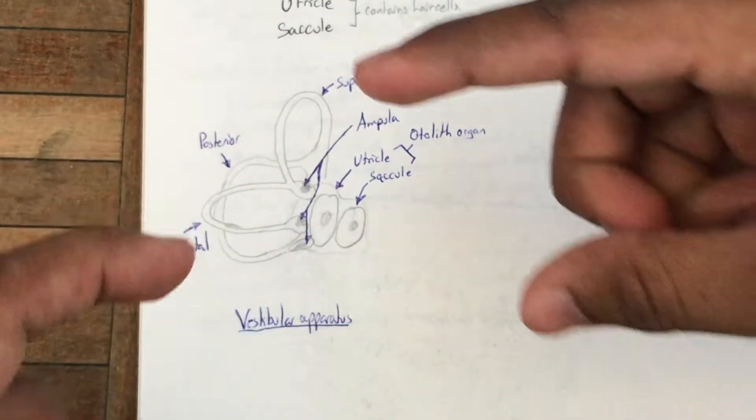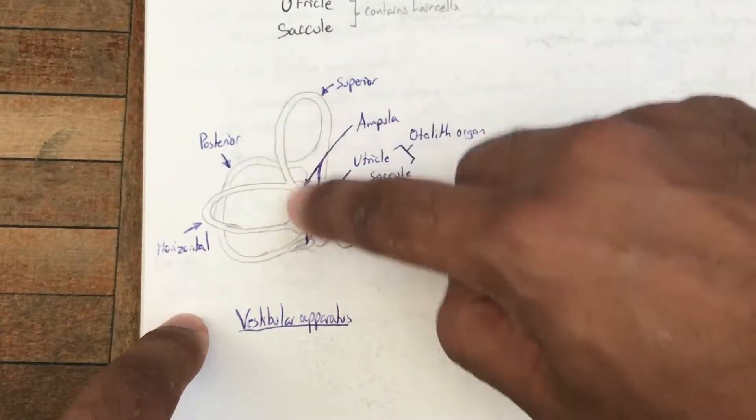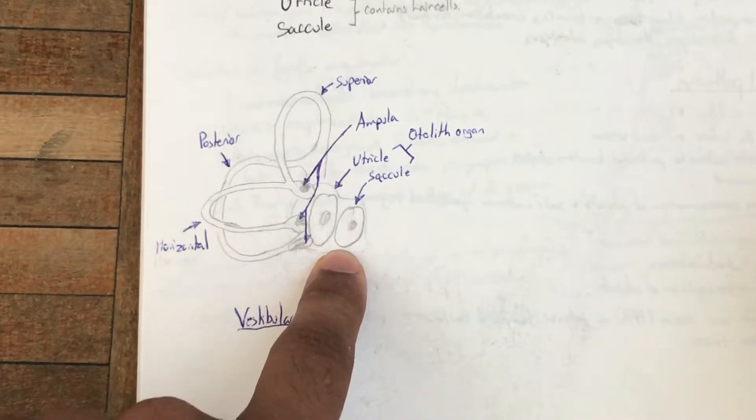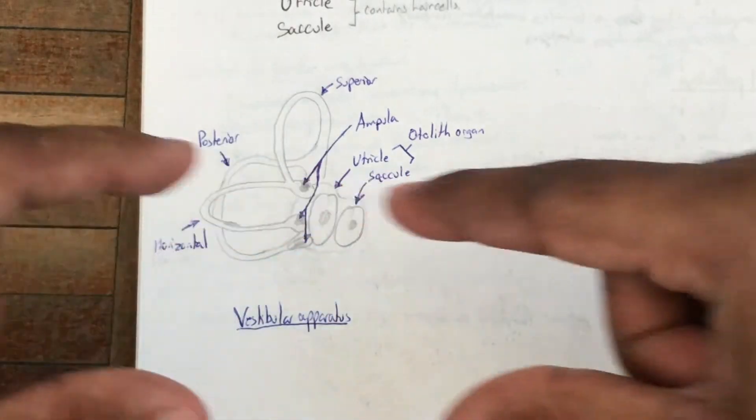The semicircular canals will measure rotation, so when you're rotating in certain directions, the fluid in that one will move and gives you a sense of movement. The otolith organs, however, are slightly different—they measure translation, so moving forward and back, side to side, up and down.